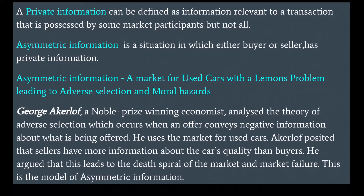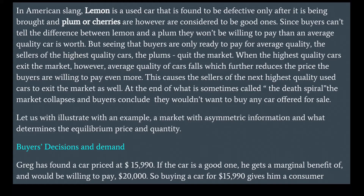This is the model of asymmetric information. In American slang, a lemon is a used car found to be defective only after it is bought, while plums or cherries are considered good ones. Since buyers can't tell the difference between a lemon and a plum, they won't be willing to pay more than an average-quality car is worth. Seeing that buyers only pay for average quality, sellers of the highest-quality cars — the plums — quit the market. When the highest-quality cars exit, the average quality falls, reducing buyer willingness to pay even more, causing the next-highest-quality sellers to exit as well. At the end of this death spiral, the market collapses and buyers conclude they wouldn't want to buy any car offered for sale.